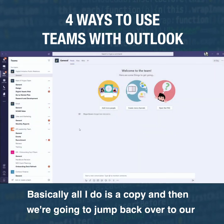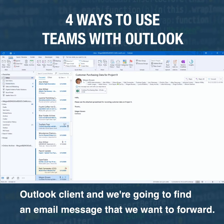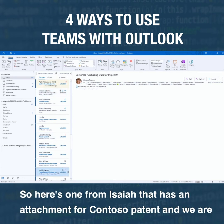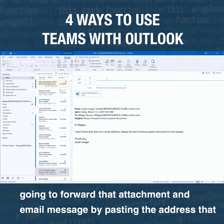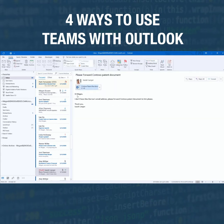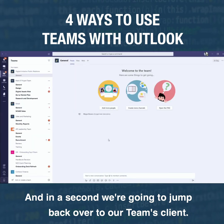All I have to do is copy that address, then jump back over to our Outlook client and find an email message that we want to forward. Here's one from Isaiah that has an attachment for a Contoso patent. We're going to forward that attachment and email message by pasting the address we got from Teams into the To field and then just hit Send.